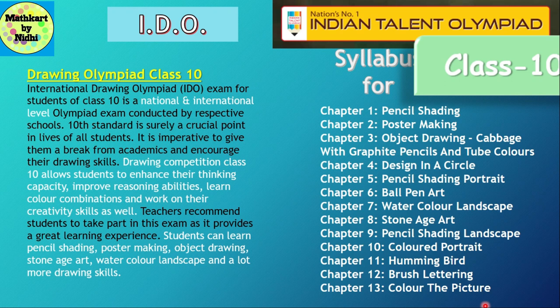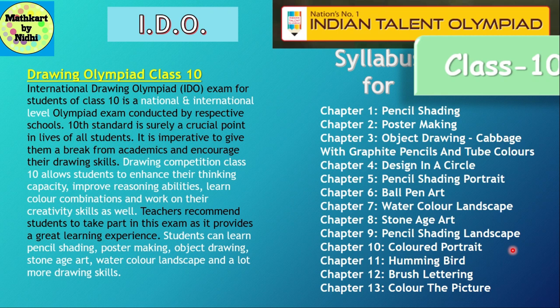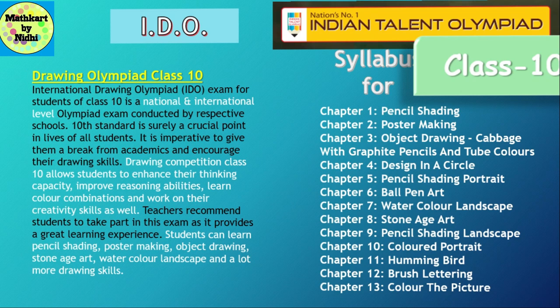ITO conducts Drawing Olympiad for students of Class 10 at national and international level. Drawing competition for Class 10 allows students to enhance their thinking capacity, improve reasoning ability, learn color combination, and work on their creative skills. Students can learn pencil shading, poster making, object drawing, stone age art, watercolor landscape, and more. This can also give relief from the burden of board exams. The syllabus for Class 10 is: pencil shading, poster making, object drawing cabbage with graphite pencil and tube colors, design in a circle, pencil shading portrait, ball pen art, watercolor landscape, stone age art, pencil shading landscape, colored portrait, hummingbird, brush lettering, and color the picture.